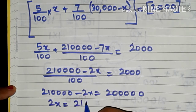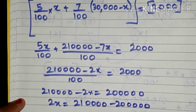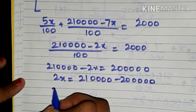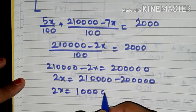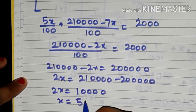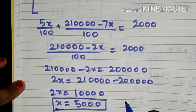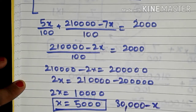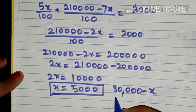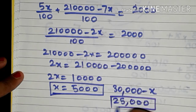Shifting the terms, we get 2x equal to this term minus this term. Be very careful with the zeros: 2x equals 1 followed by 4 zeros, that is 10,000. So x equals 5,000, meaning we invest 5,000 in the first bond. The second bond receives 30,000 minus x, which is 30,000 minus 5,000 — that means 25,000 rupees in the second bond.